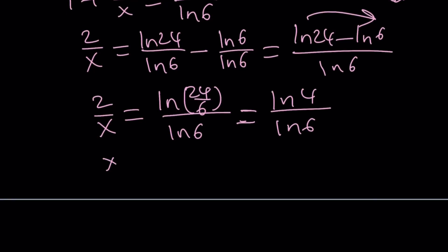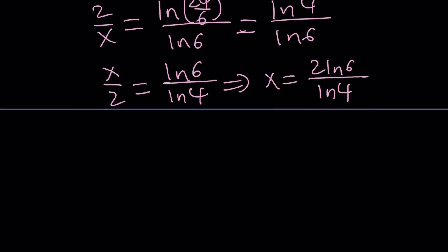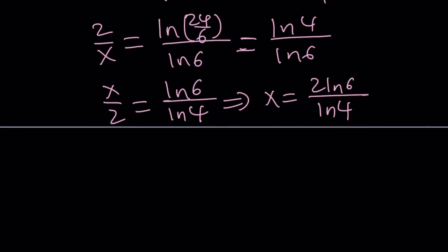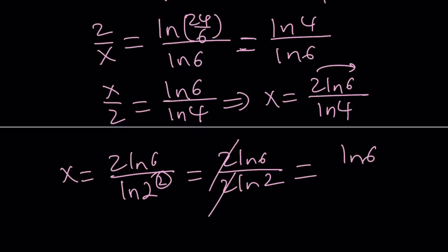Let's flip both sides. x over 2 equals ln 6 over ln 4. And from here I can multiply both sides by 2. x becomes 2 ln 6 over ln 4. Now you have two options here to simplify x. You can either put the 2 here as a power and then simplify, or you can expand 4 as 2 squared, which I think is better. And now write it as 2 ln 6. Move the 2 to the front. 2 ln 2. The 2 cancels out and x becomes ln 6 over ln 2.